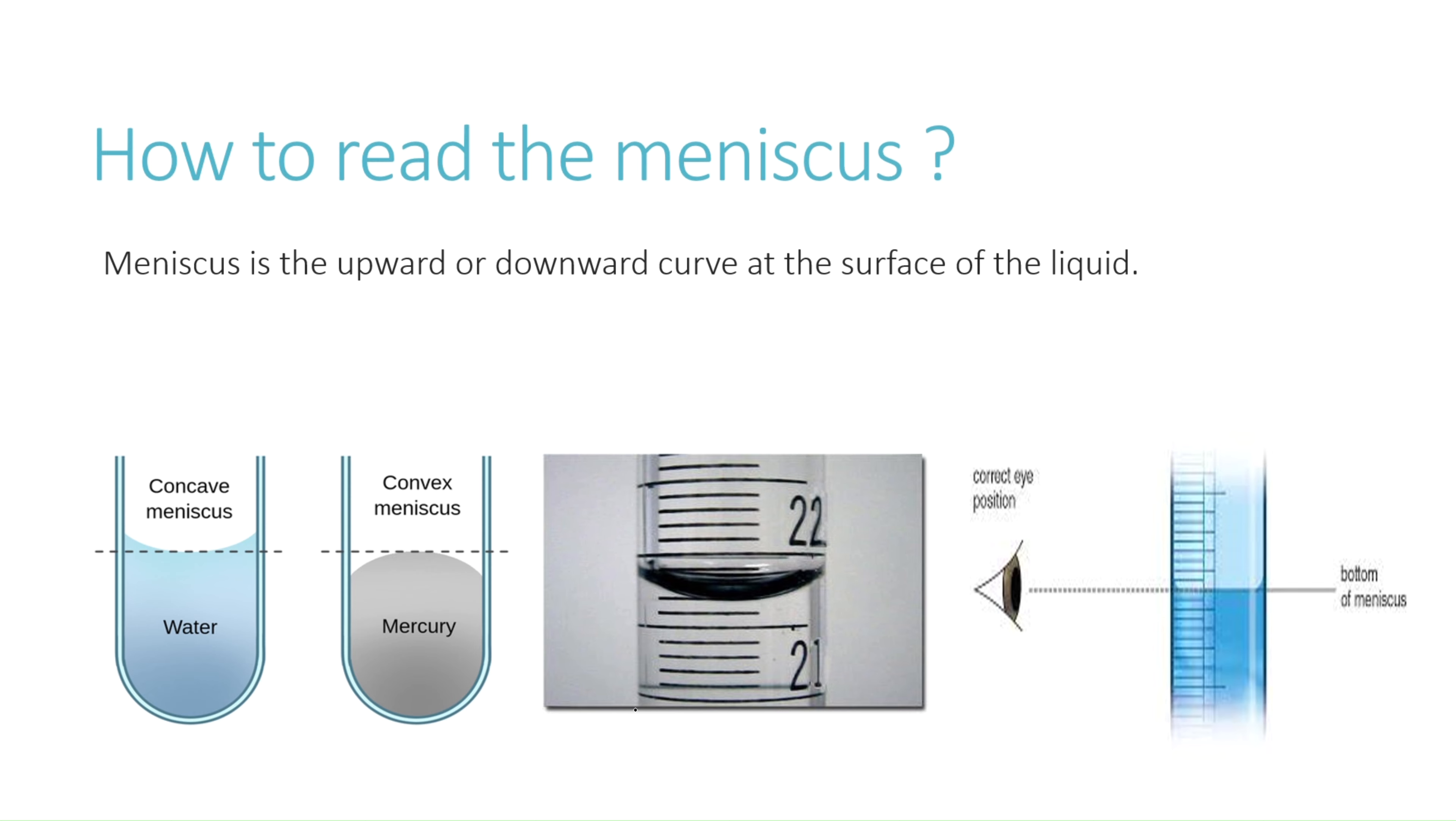Meniscus is the upward or the downward curve at the surface of the liquid. The level of water is never flat when you take it in a cylinder or burette. It is always curved downwards, and mercury always curves upwards because in mercury the cohesive or binding forces are very strong, so meniscus curves upwards. While taking a reading, check the correct position of the eye and read the bottom of the meniscus in case of water. If it is mercury, then for mercury you have to read the upper meniscus.